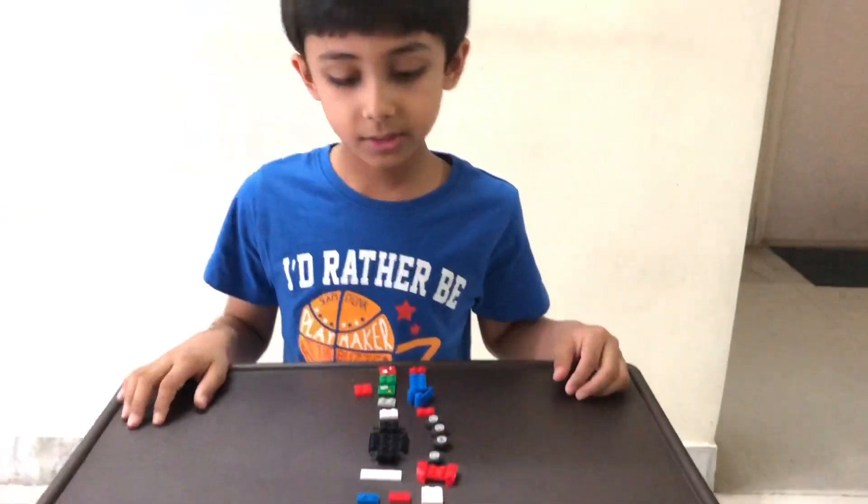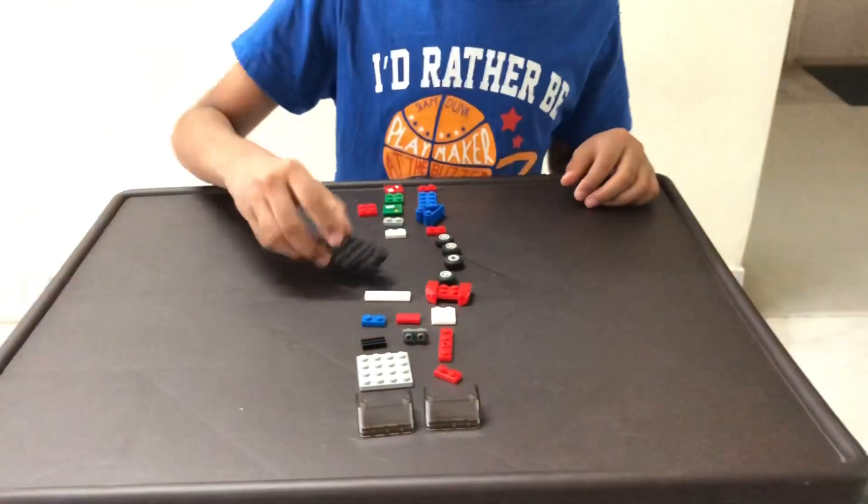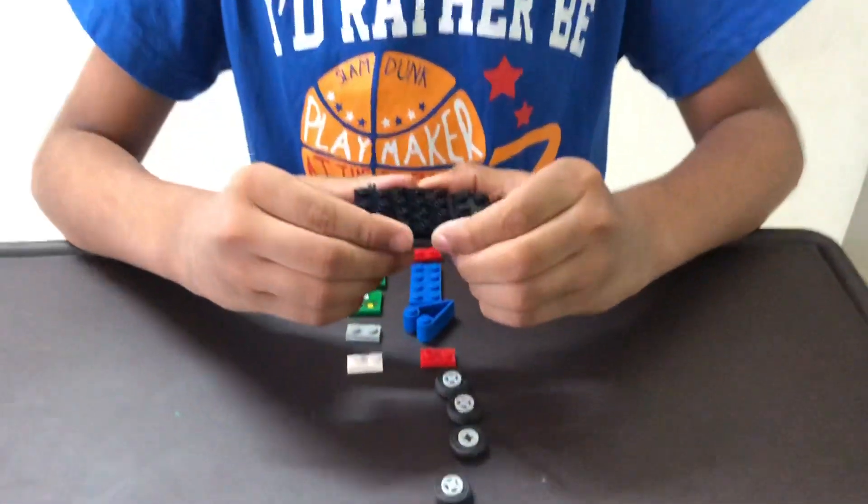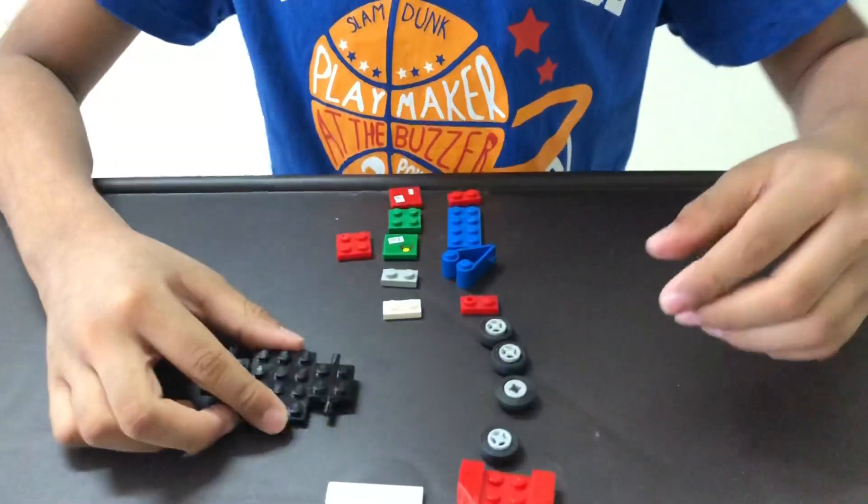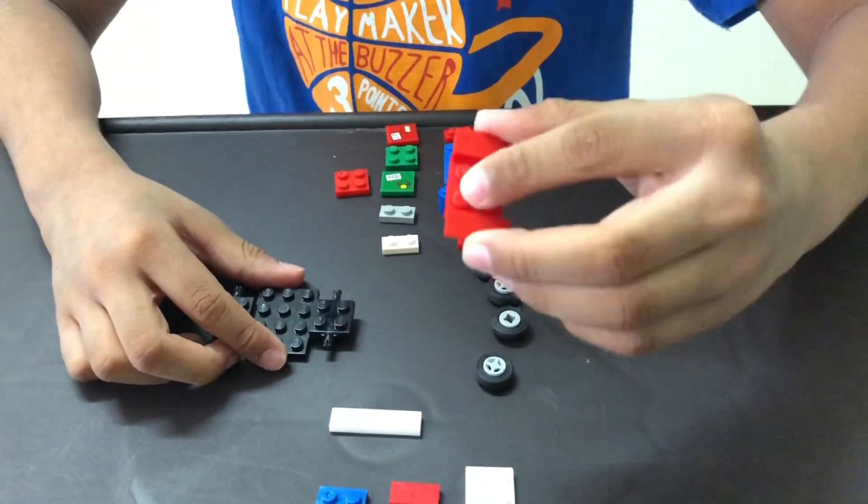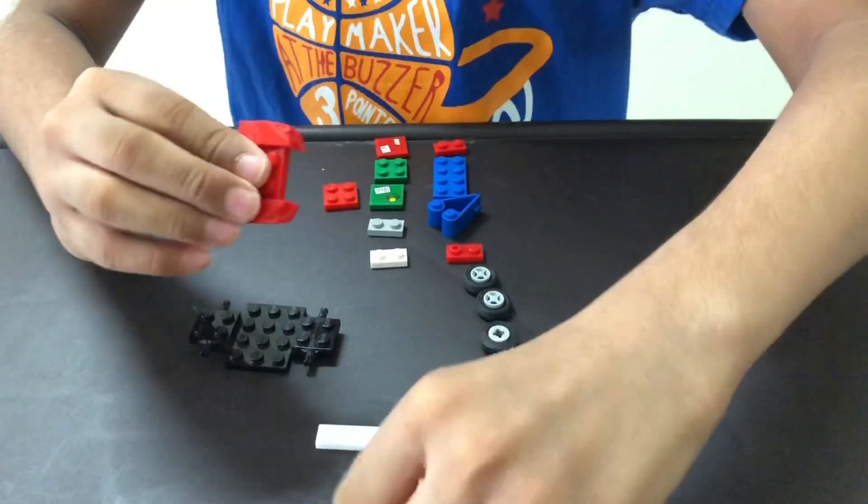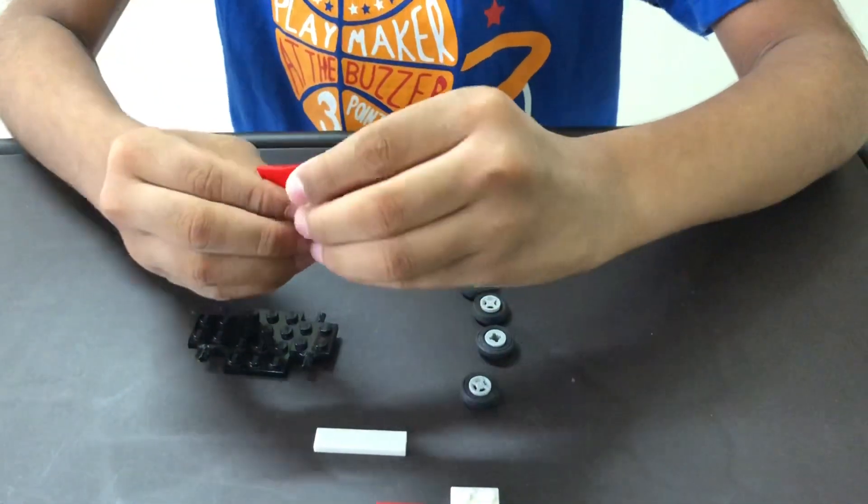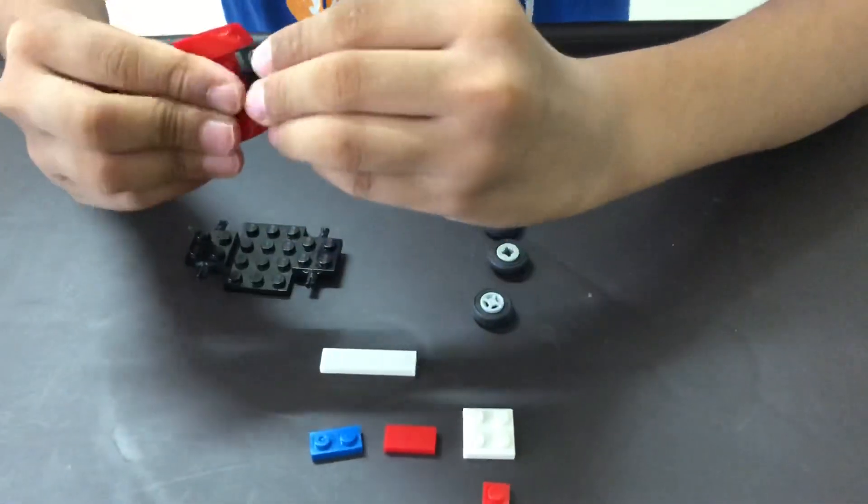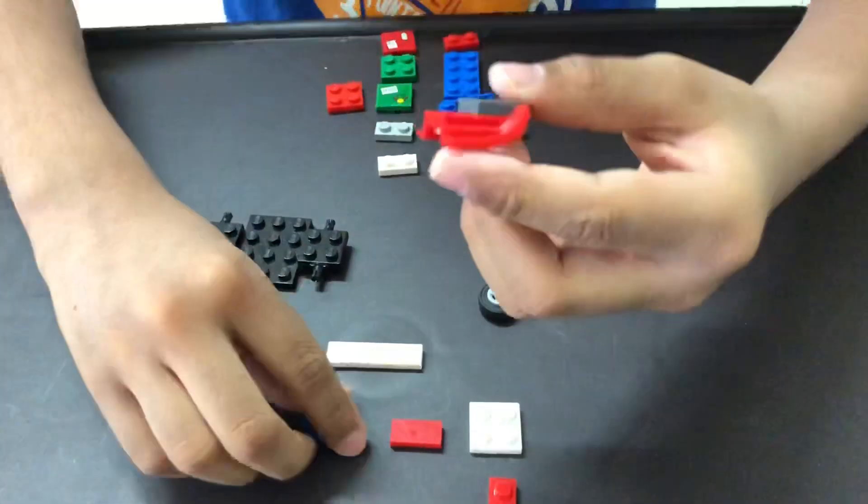So let's get started. First, you have to use a chassis and on top, you have to put this. But first, you need to put the L connector and the radar connected to it.